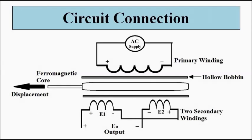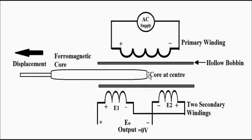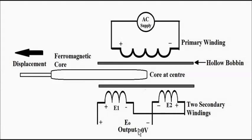How does this LVDT system work? The working principle is such that when the movable ferromagnetic core is at the central position — the initial position of the transducer — the degree of coupling of the primary winding with each of the secondary windings will be the same. As the degree of coupling with both secondaries is equal, the same voltage will be generated across each secondary. The difference between them will be zero, so the net output will be zero volts when the core is at the center.